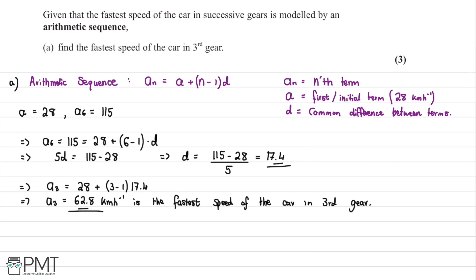This question was worth three marks. We get the first mark for working out D, the second mark for substituting values in to find A3, and the third and final mark for concluding with the correct answer of 62.8 kilometers per hour.